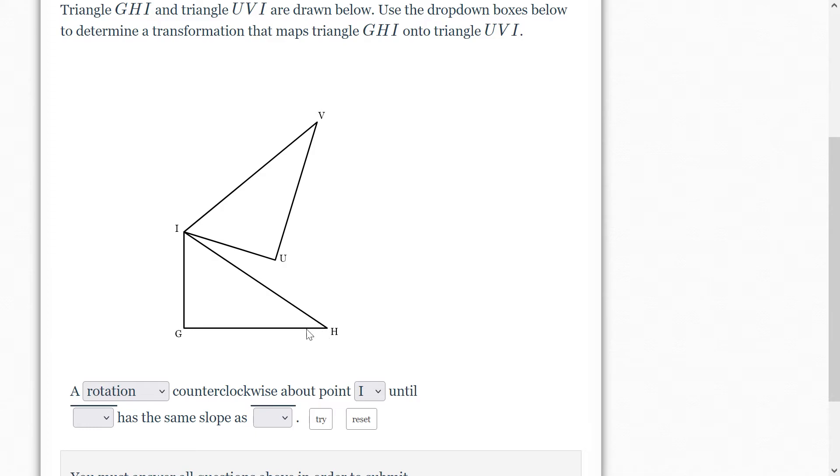Now this sounds a little crazy - something has the same slope as something - but once again we're just going to choose any one of these. Let's just choose G H. Well, which side should G H match with? Well it should match with U V. All right, let me hit try.